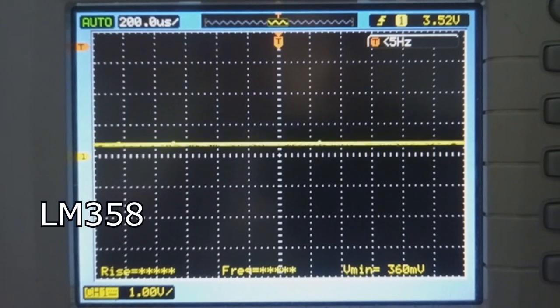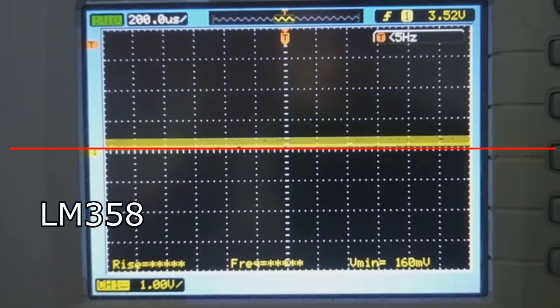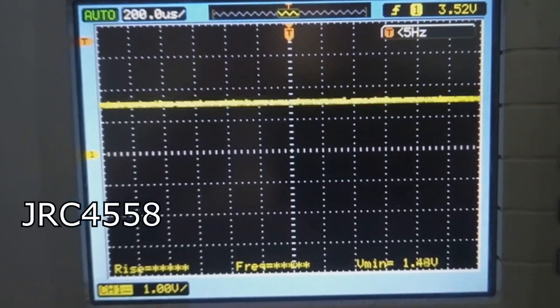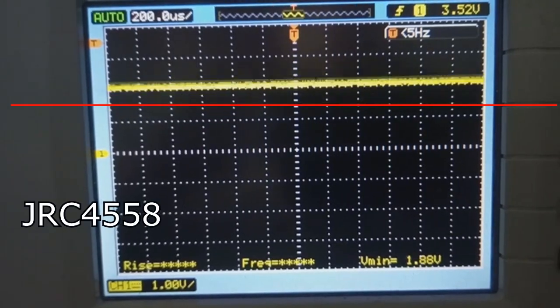For the 358 type op-amps and fake op-amps the output will go all the way to 0 volts. For the other types including the legit TL072, the output will feel like it gets stuck around 1.40 volts.